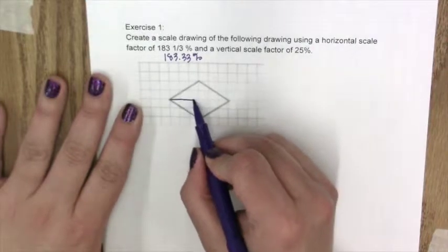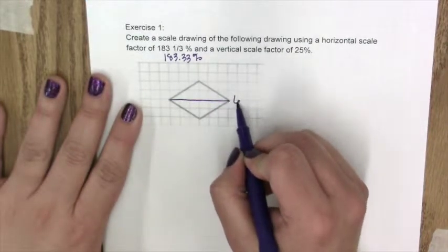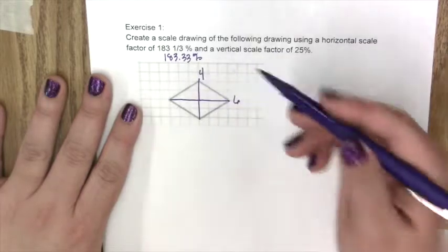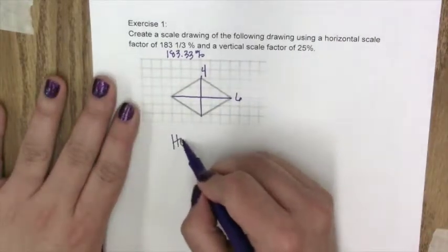So we need to count some distances here. We'll do our horizontal distance which is 6 units and our vertical distance which is 4 units. So let's work on our horizontal first.